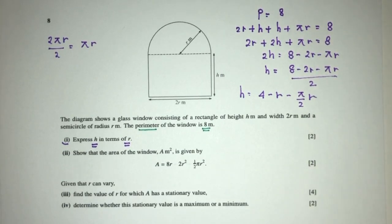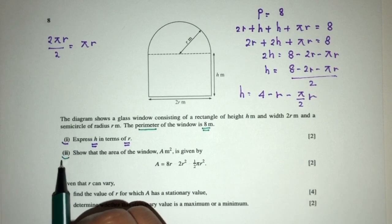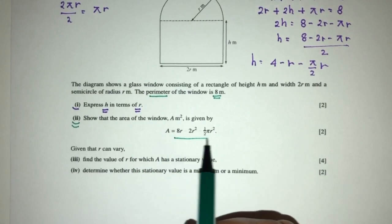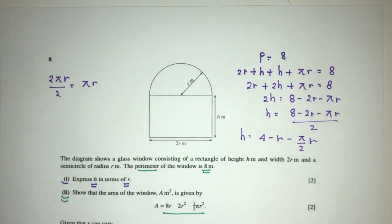There you go. That will be h in terms of r. Now, for part 2, we have to show the area of the window is given by this. So how would you find the area of the window? There's 2 parts, obviously. On top, we have this one,